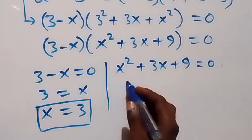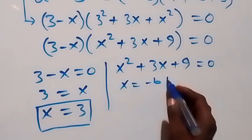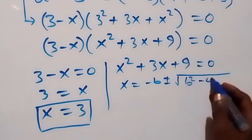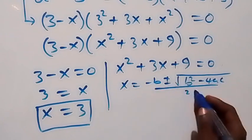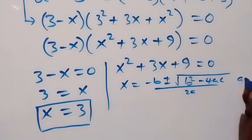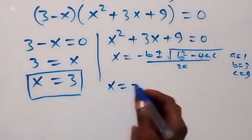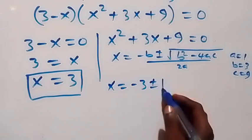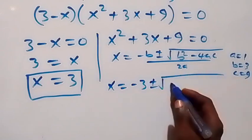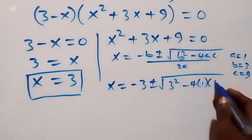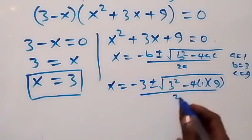And from here, using the quadratic formula: x equals minus b plus or minus square root of b squared minus 4ac, over 2a. Where a here is 1, b here is 3, and c here is 9. From here this formula becomes x equals minus 3 plus or minus square root of 3 squared minus 4 times 1 times 9, then over 2 times 1.